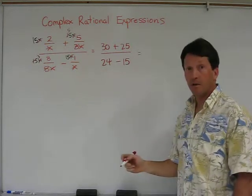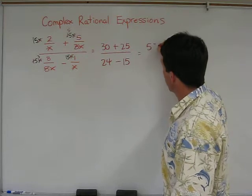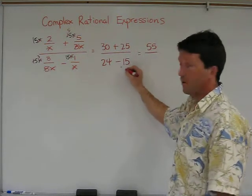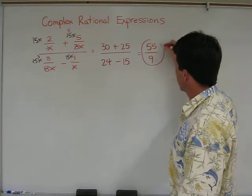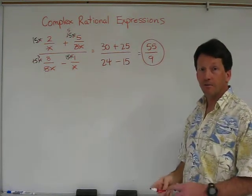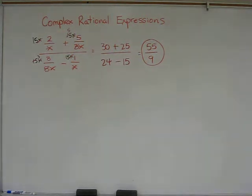Now you just go ahead and simplify the fraction. 30 and 25 is 55. 24 minus 15 is 9. And that's my answer, because 55 over 9 can't be reduced.